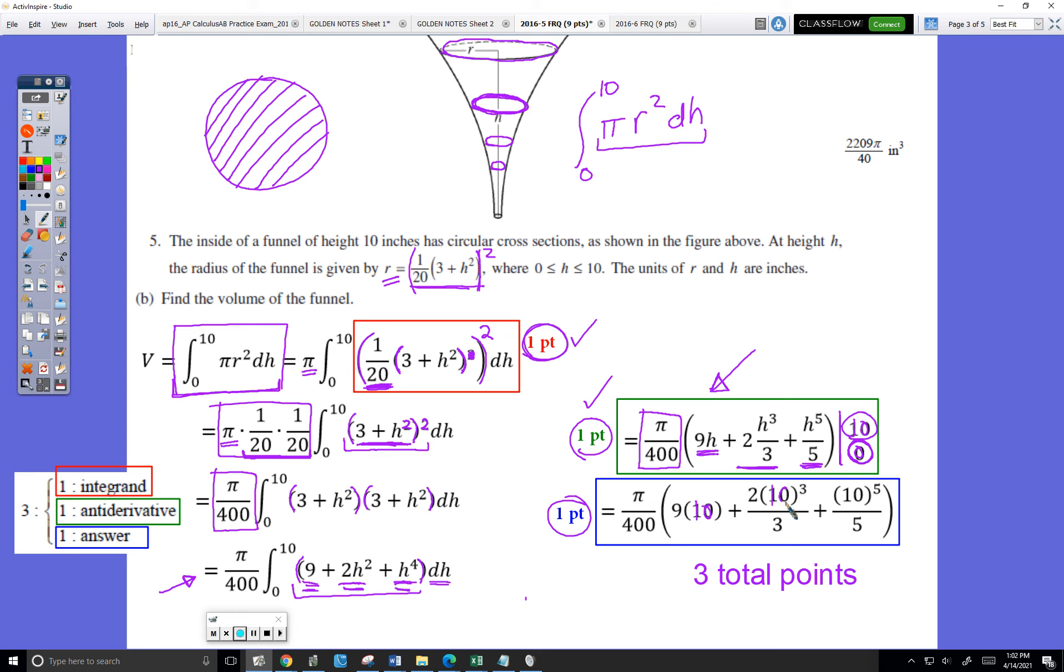I don't do any simplification. Don't spend time doing that. Just stop. Three total points for number 5 part B.